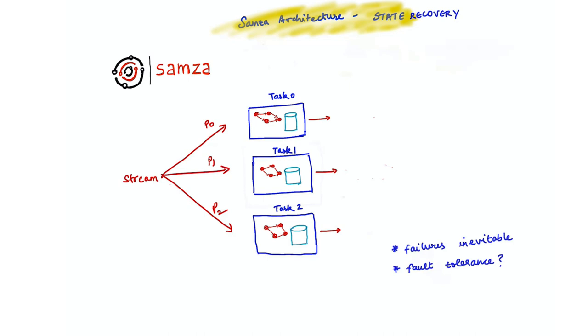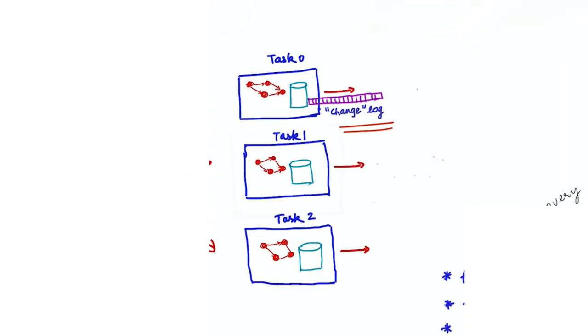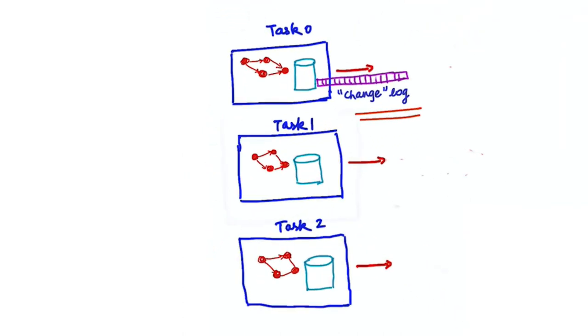While having a durable local state store offers excellent performance, failures are inevitable and we should still guarantee fault tolerance in the presence of failures. For this purpose, Samza replicates every write to the store into a separate stream which we call a change log for the store.